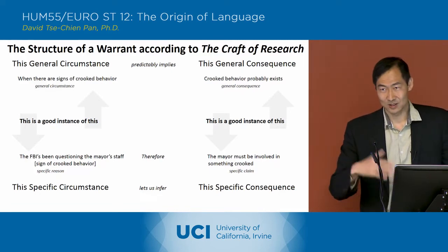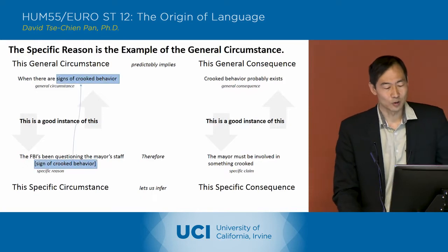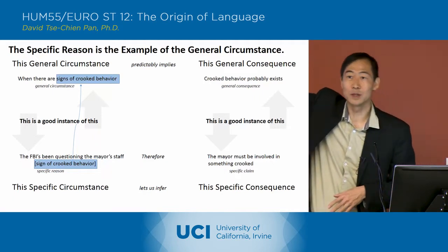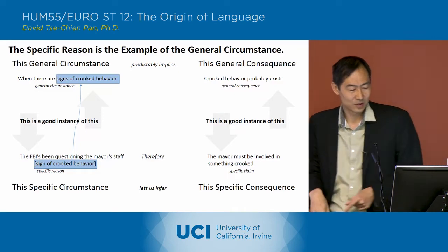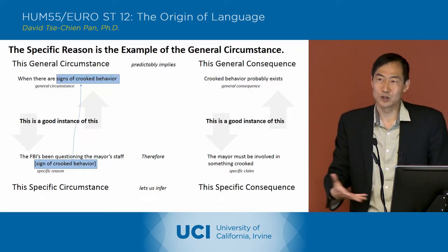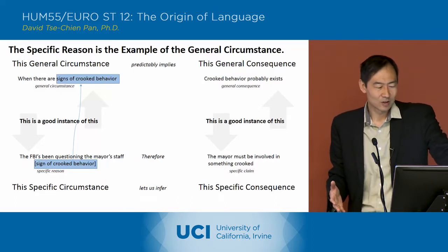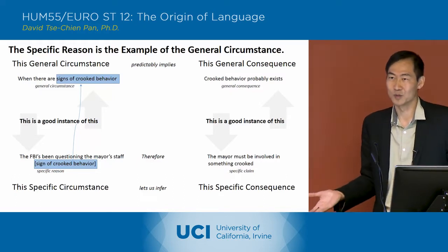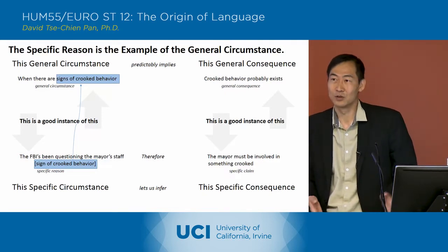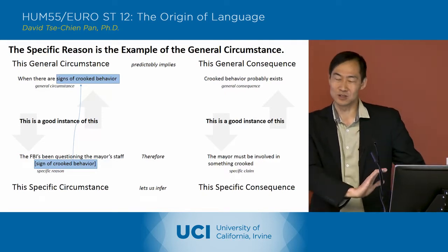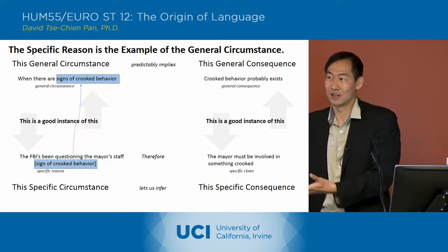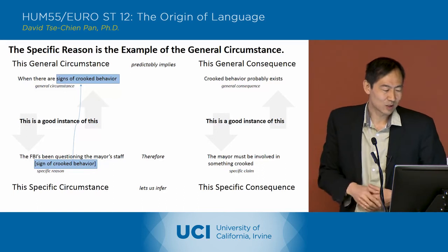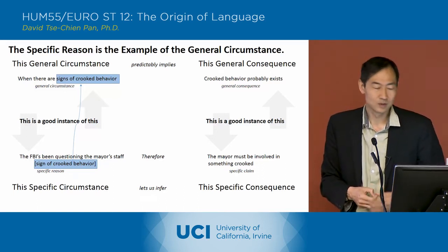The first piece we notice in this diagram is that 'signs of crooked behavior' shows up in two places. They have it down here under specific reasons. The basic argument being analyzed is that the FBI's been questioning the mayor's staff, therefore the mayor must be involved in something crooked. So the FBI questioning the mayor's staff is the evidence side, and the mayor being involved in something crooked is the claim side. This FBI questioning is identified as a sign of crooked behavior, placed at the bottom.